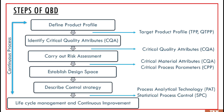Here we can see the six different steps involved in QBD. Step one is defining the product profile, which involves defining the TPP (Target Product Profile) and QTPP (Quality Target Product Profile). Step two is to identify critical quality attributes. Step three is to carry out risk assessment. After that, we can determine the critical material attributes and critical process parameters. On that basis, we can establish the design space and describe a control strategy, which constitutes using statistical process control. And the last step is continuous improvement — it's like a life cycle management. So this is overall a continuous process.